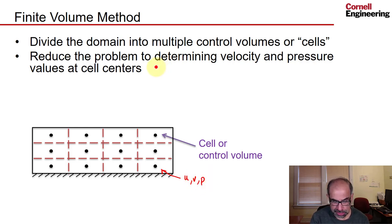Which means that we are going from trying to determine three unknown functions, u of xy, v of xy, and p of xy, to 12 times 3, because we have 12 cell centers, and in each cell center, we need three values, so 36 values.